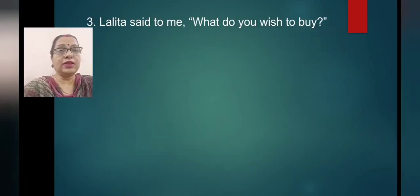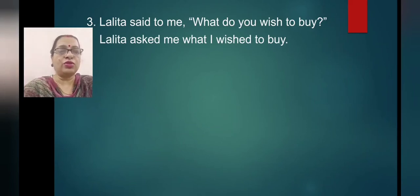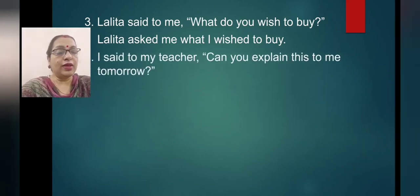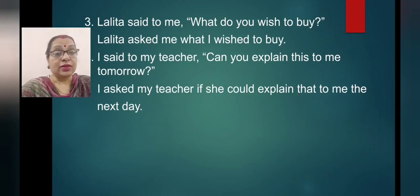'Lalita said to me, what do you wish to buy?' Indirect: 'Lalita asked me what I wished to buy.' Said is the reporting verb, so simple present 'wish' becomes simple past 'wished.' Next: 'I said to my teacher, can you explain this to me tomorrow?' Indirect: 'I asked my teacher if she could explain that to me the next day.' Can becomes could, 'if' is used since the sentence starts with a verb, and tomorrow becomes the next day.